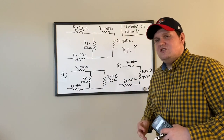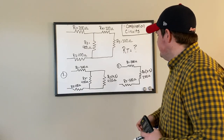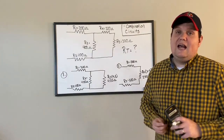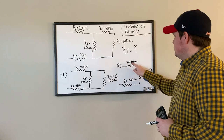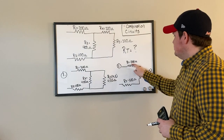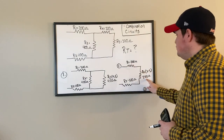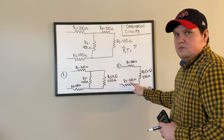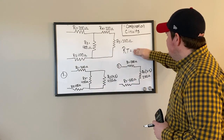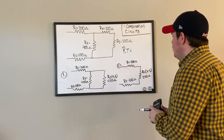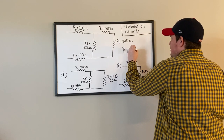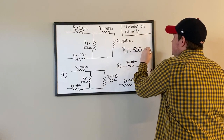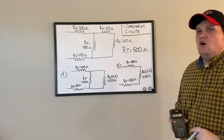How do I add resistors in series? I just add them up. 200 ohms plus 200 ohms plus 100 ohms gives me an R total of 500 ohms.